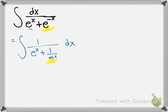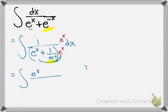The next thing I'm going to do is simplify this one more time to get rid of the fraction. I'll multiply by e to the x on top and bottom. Now I have e to the x on top, and on the bottom e to the x times e to the x becomes e to the 2x, plus 1 over e to the x times e to the x becomes 1, dx.